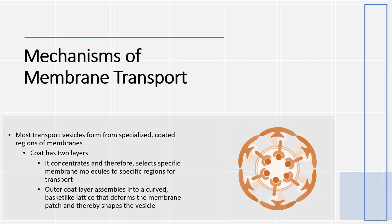Most transport vesicles form from specialized coated regions of the membrane. Coat has two layers. Inner layer concentrates and therefore selects specific membrane molecules to specific regions for transport. Outer layer assembles into a curved basket-like lattice that deforms the membrane patch and thereby shapes the vesicle.